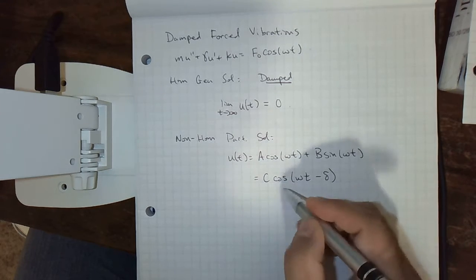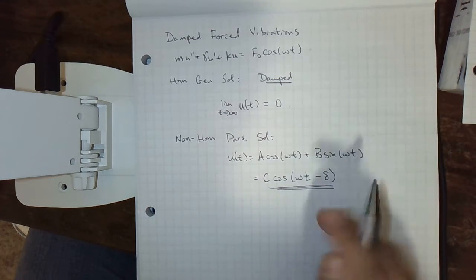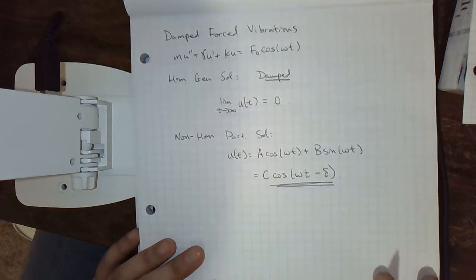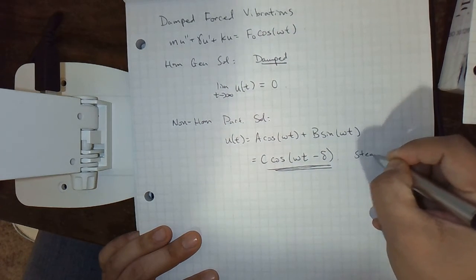So as t gets big, the solution is going to look largely like our guess for the non-homogeneous particular solution. So we call this the steady state solution.